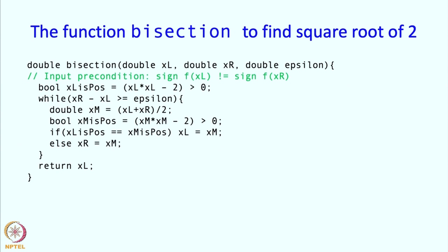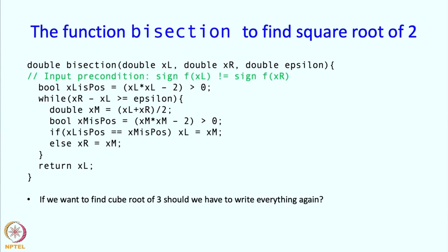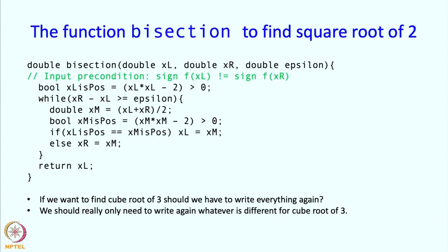We could use bisection to find other things also. Say we want to find the cube root of 3 — do we need to write everything again? Not really. We only need to change the places where we evaluate the polynomial. There are only 2 such places: where we evaluate x squared minus 2 we would instead evaluate x cubed minus 3, and similarly for xm. That is really the only change we want to make.